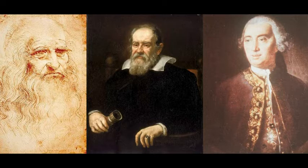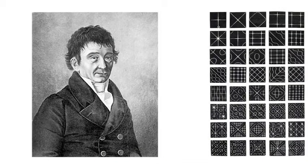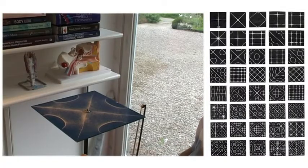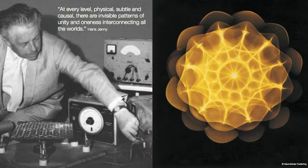If we have a quick look at the history of cymatics, beginning with the observations of resonance by Da Vinci, Galileo, and the English scientist Robert Hooke, and then Ernest Chladni — he created an experiment using a metal plate, covering it with sand and then bowing it to create the Chladni patterns you see here on the right. Moving on, the next person to explore this field was Hans Jenny in the 1970s, and he actually coined the term cymatics.